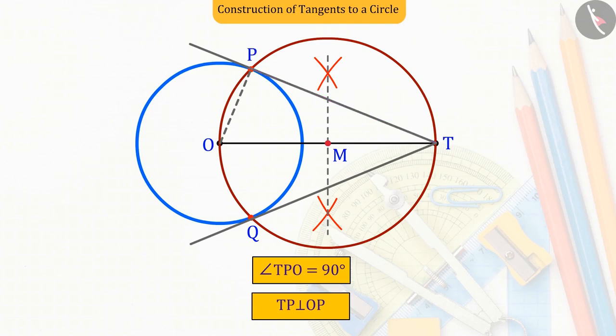So can we also say that TQ is also the tangent line of a circle? Using what we learned today, you can find the answer to this question yourself.